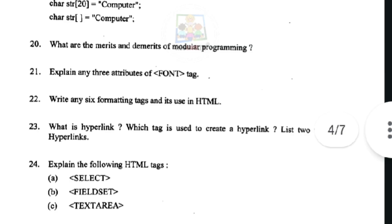Next question: explain the following HTML tags. The Select tag is used to create a drop-down list box. The Fieldset tag is used to group related controls in a form. The Textarea tag is used to provide space for text input in more than one line.